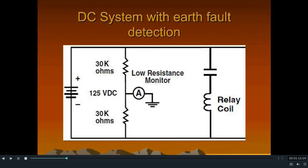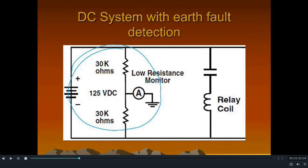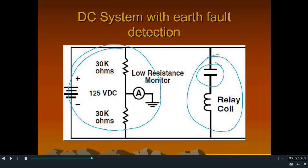Before we discuss DC earth fault in the system, let us understand how the DC system works. The DC DB of a substation consists of a battery bank which is connected to a high resistance that is also divided in between and connected to earth to get the virtual zero potential. This is the DC DB in a substation. On the right hand side of the circuit, the load is connected to the DC DB or the battery. The load consists of the relay, the circuit breaker, or any other coils. The battery DC positive and negative are separated from each other by NO contacts, which are provided over the coils as logic.